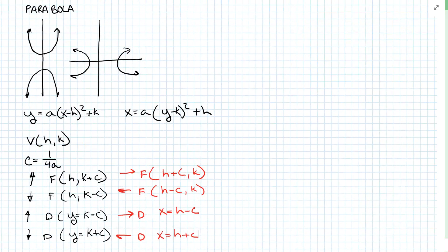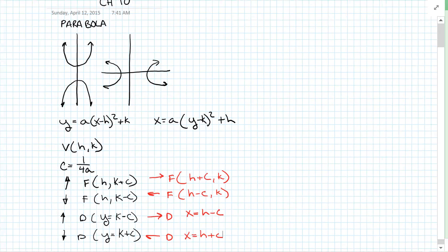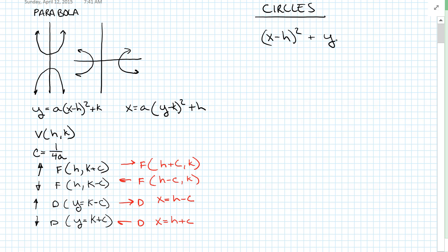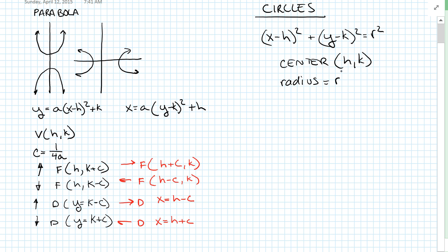Next we have circles — circles are fairly easy. The standard equation for a circle is x minus h squared plus y minus k squared equals r squared, where the center is h comma k and the radius is the r value. It's just a translation with your h and k values. That is everything you need to know about a circle.